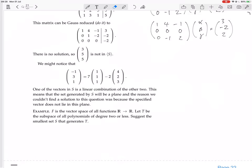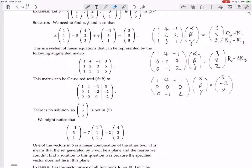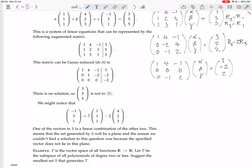Okay, because it will be a set generated by just two vectors, which is a plane. And the reason we couldn't find a solution to this question was because the specified vector does not lie in this plane. Okay, so even though this set S has three vectors in it, the set S has three vectors, right?